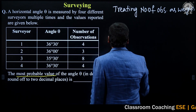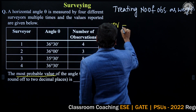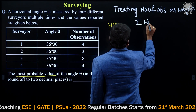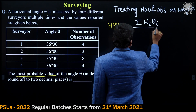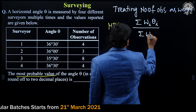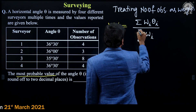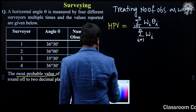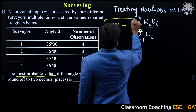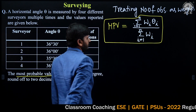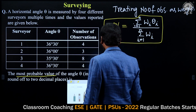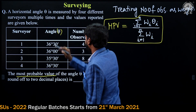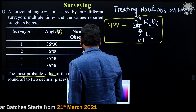The most probable value can be written as: summation of w_i times theta_i, divided by summation of w_i, where i equals 1 to n. This is the equation we will use. The number of observations will be treated as w and the angle values as theta. Let us substitute the values.